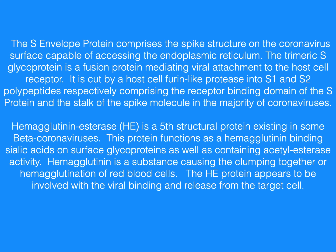The S envelope protein comprises the spike structure on the coronavirus surface, capable of accessing the endoplasmic reticulum. The trimeric S glycoprotein is a fusion protein mediating viral attachment to the host cell receptor. It is cut by a host cell furin-like protease into S1 and S2 polypeptides, respectively comprising the receptor binding domain of the S protein and the stalk of the spike molecule in the majority of coronaviruses.